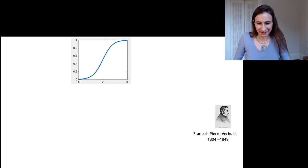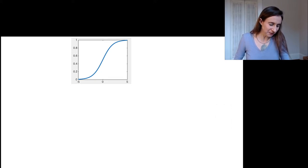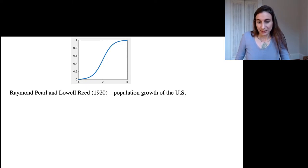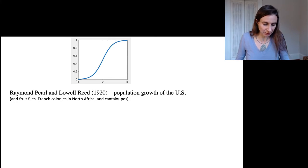Verhulst's work, unfortunately, was sadly forgotten. For quite a long time it just vanished. Even though it was published, people didn't know about it. It was rediscovered by Raymond Pearl and Lowell Reed in about 1920. They were modeling population growth of the United States, fruit flies, French colonies in North Africa, cantaloupes, and anything else they could get their hands on.